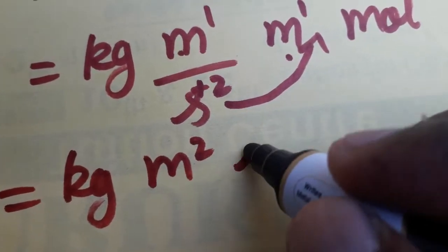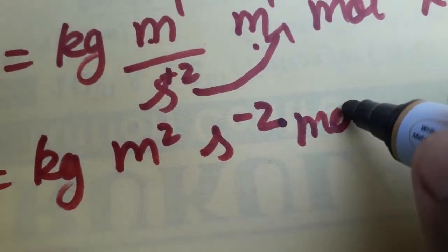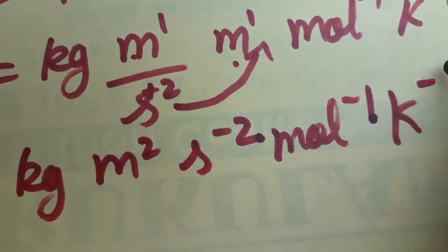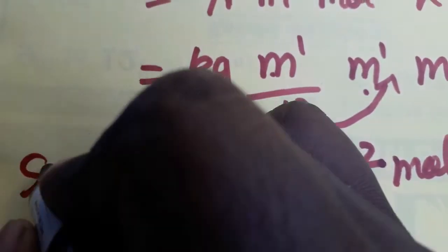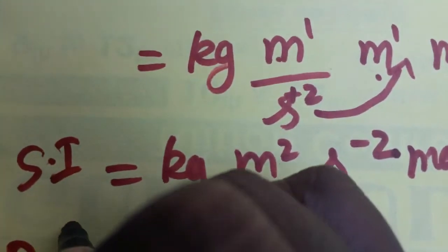So kg meter square second minus two, mole inverse, kelvin inverse. This is the SI unit and dimensional formula for molar mass.